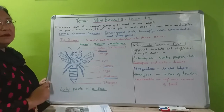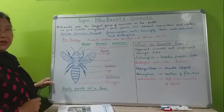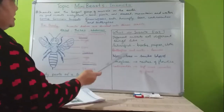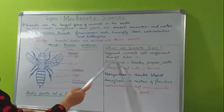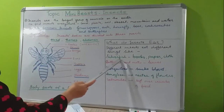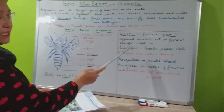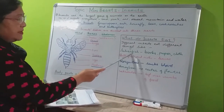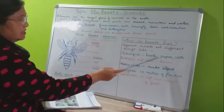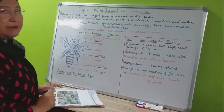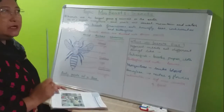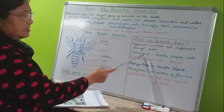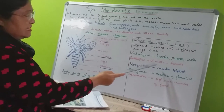So those are the different parts of the body — you can draw this in your copy later, and I'll send you a nice image of the body parts of a bee. Now, what do insects eat? Different insects eat different things. Silverfish — I'll send you a picture of this later — they love to eat books, paper, and cloth. If you go to the library, old books are always eaten by silverfish.